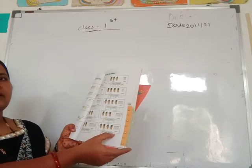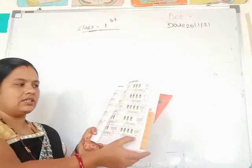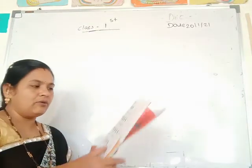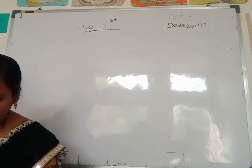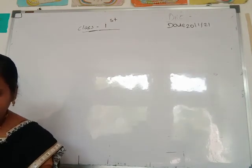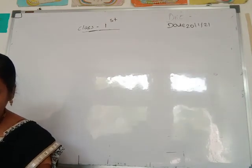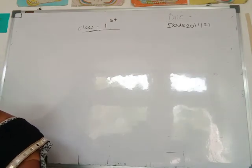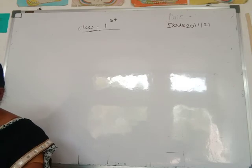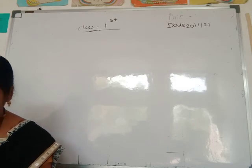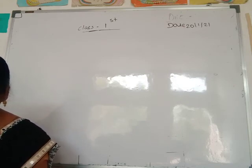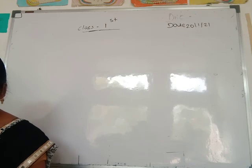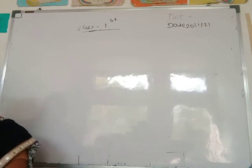Which number is formed here — 46? In homework, you complete Chapter 8.1 — numbers from 21 to 50, write the number. These two pages in homework you complete. The remaining part we will do tomorrow. Bye.